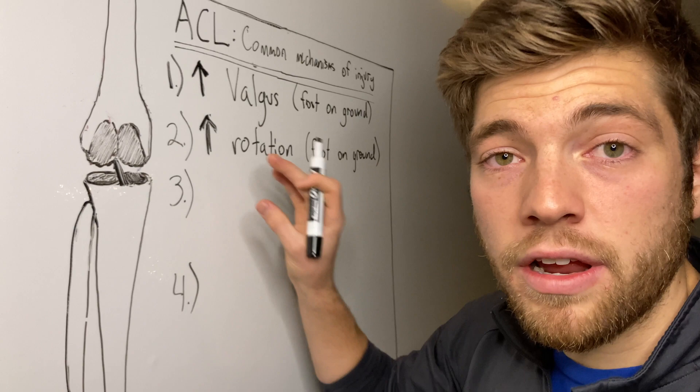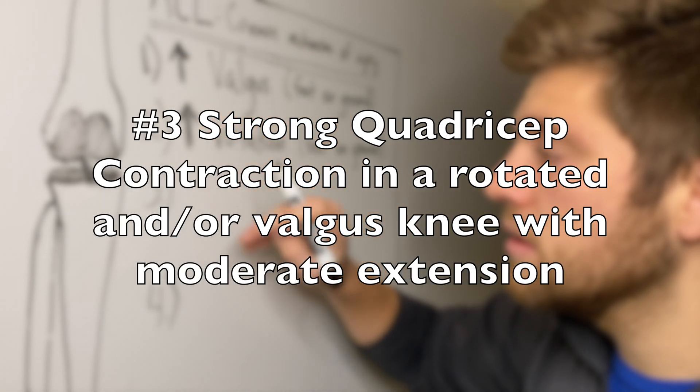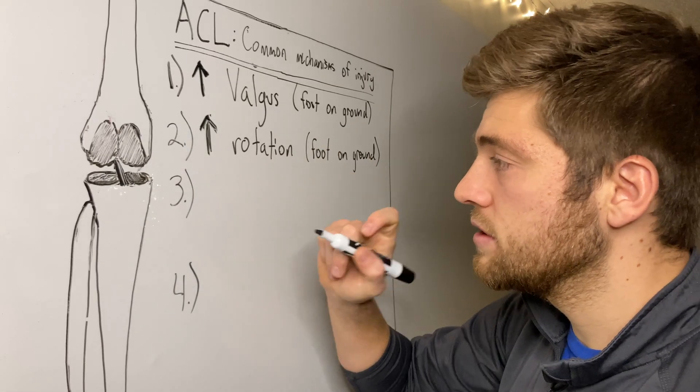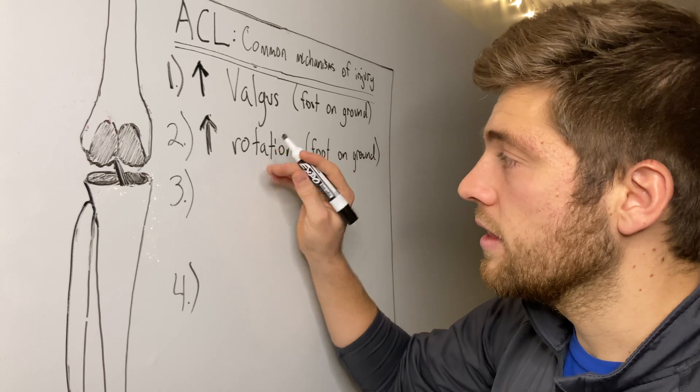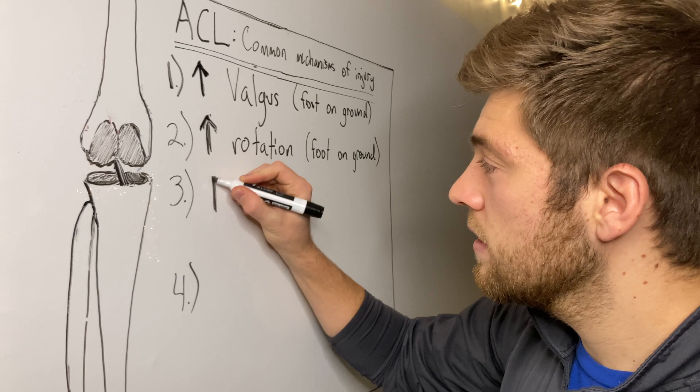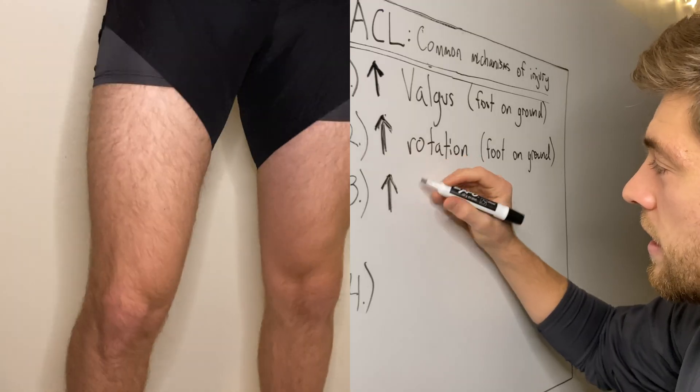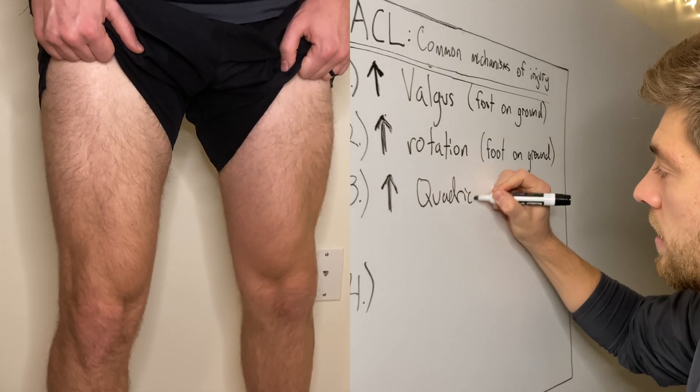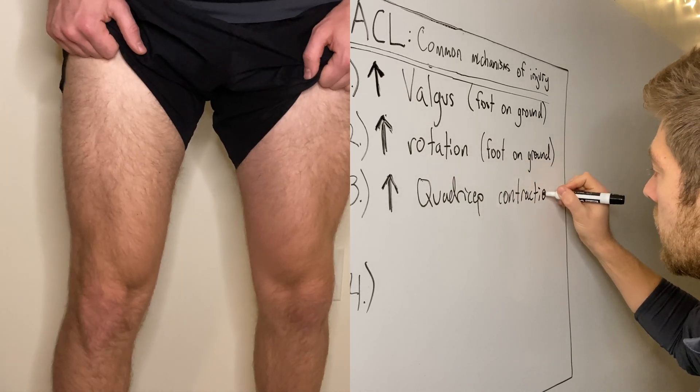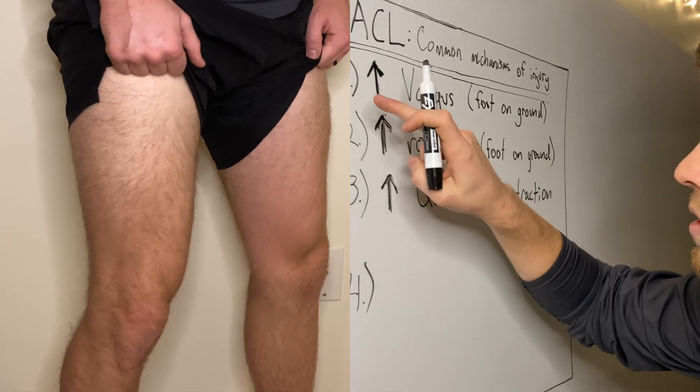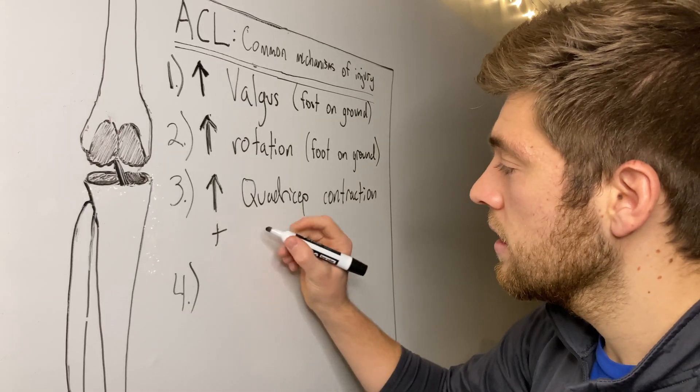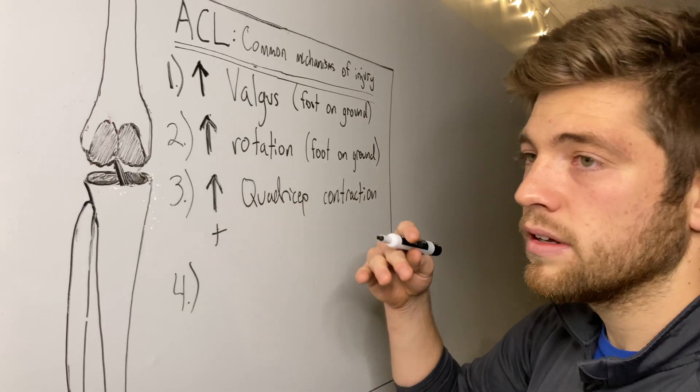Number three is a combination of one and two, either with the leg collapsed in with an excessive rotation or an excessive valgus. But the key part that makes it different is excessive quadricep contraction with either excessive rotation or excessive valgus, along with the knee being close to full extension.